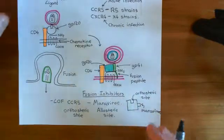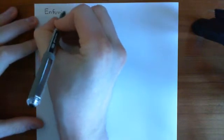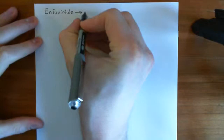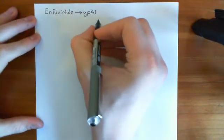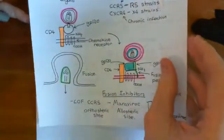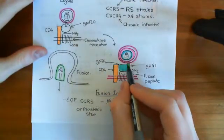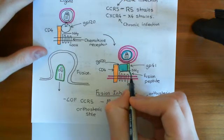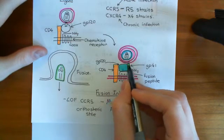There's another fusion inhibitor — a drug known as Enfuvirtide. Enfuvirtide is a drug which binds to GP41; its target is GP41. It stops GP41 from being able to change conformation to produce the fusion peptide, and stops GP41 from being able to fuse the two membranes together. In order to get membrane fusion, GP120 must bind to CD4 and then to its co-receptor, triggering a conformational change in GP41 that produces the fusion peptide. Enfuvirtide prevents this.